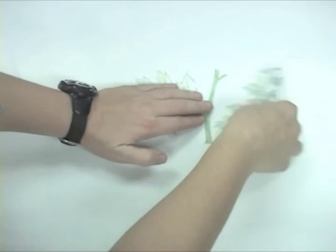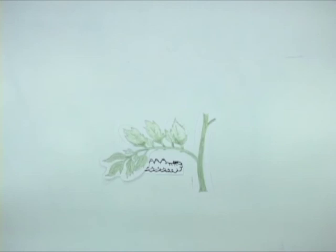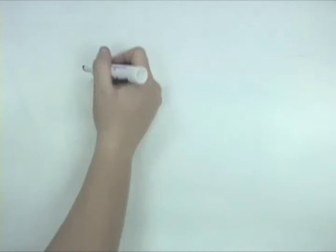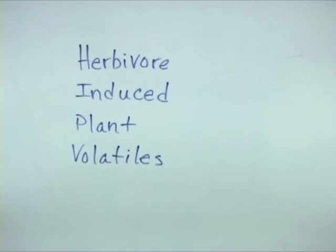This plant is being eaten by a tomato hornworm, a voracious herbivore. The tomato plant senses it is being eaten. And this damage causes the plant to produce and release a bouquet of volatile chemicals known as herbivore-induced plant volatiles, commonly referred to as HIPVs.